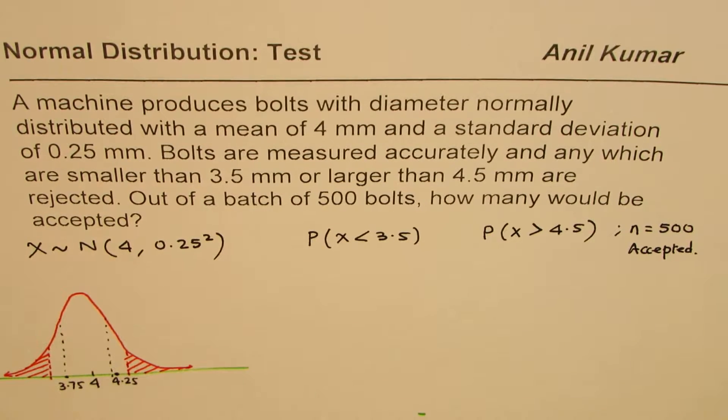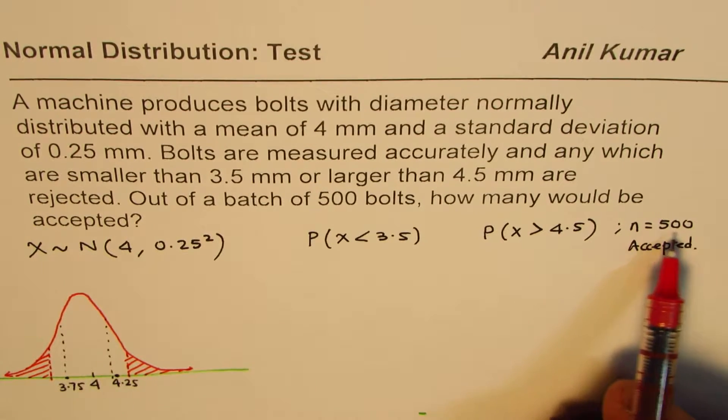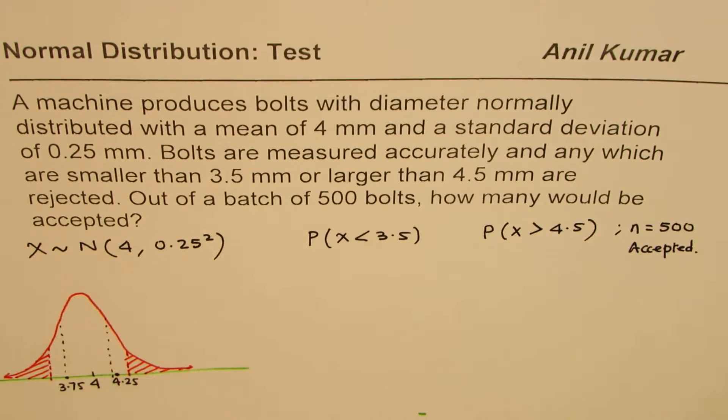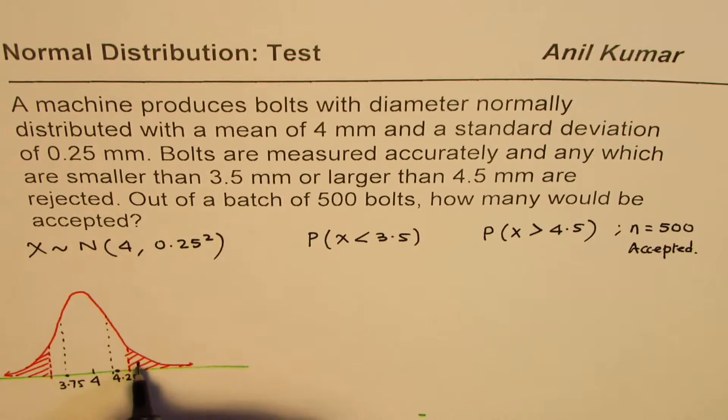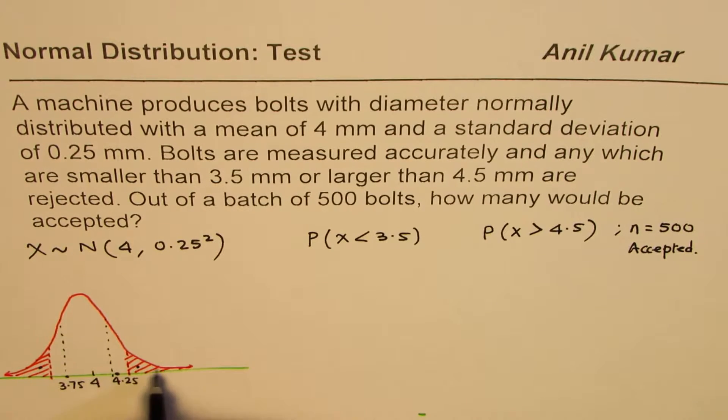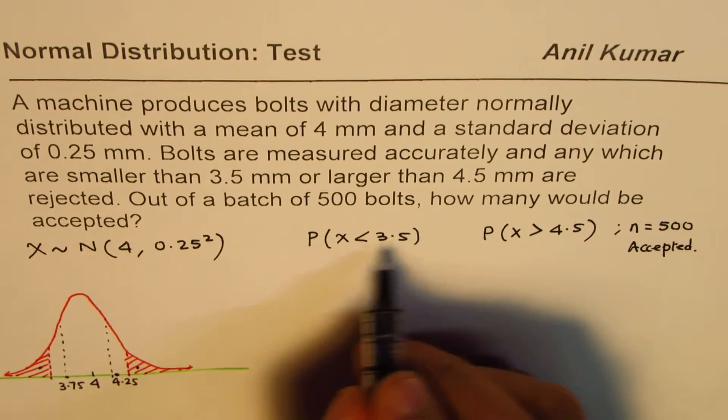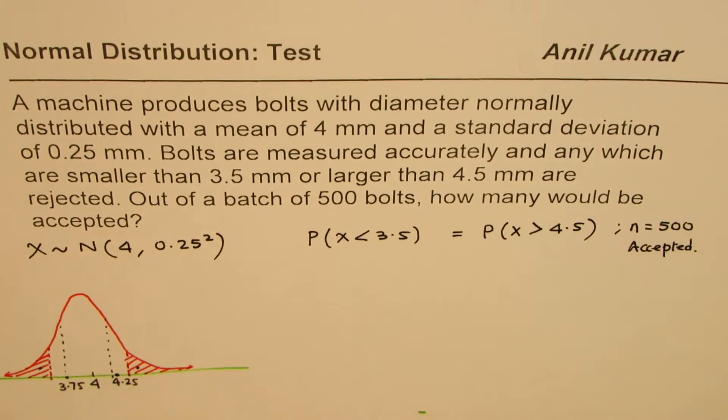Everything in between is accepted, that's the question, and from a lot of 500 how many will be accepted, that is what you need to find. I hope it's absolutely clear. Now from the symmetry we can see that both areas are exactly same since normal graph is symmetric about 4.